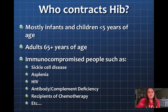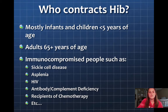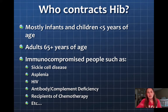Who contracts HIV? Mostly infants and children under 5 years of age, which is why it is very important to vaccinate them during their early infant months. Adults 65 years of age and older are also at risk. Additionally, immunocompromised people — such as those with sickle cell disease, asplenia, HIV, antibody complement deficiency, and recipients of chemotherapy — are at elevated risk.